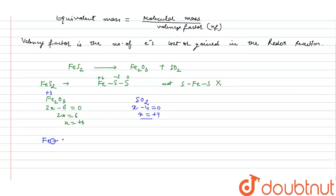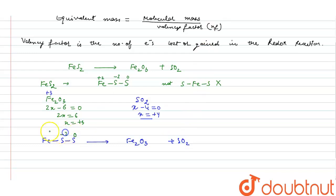We will now write the oxidation states: FeS₂ gives Fe₂O₃ plus SO₂. In FeS₂, the oxidation state of one S is zero, the other S is minus two, and Fe is plus two. In the products, Fe is plus three and sulfur in SO₂ is plus four.